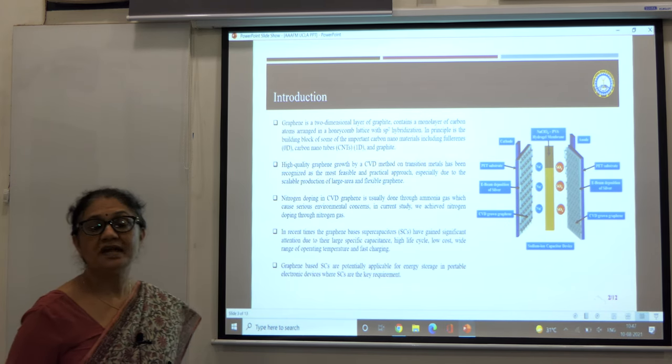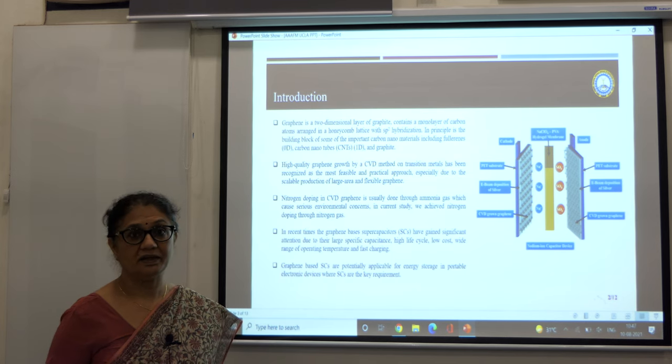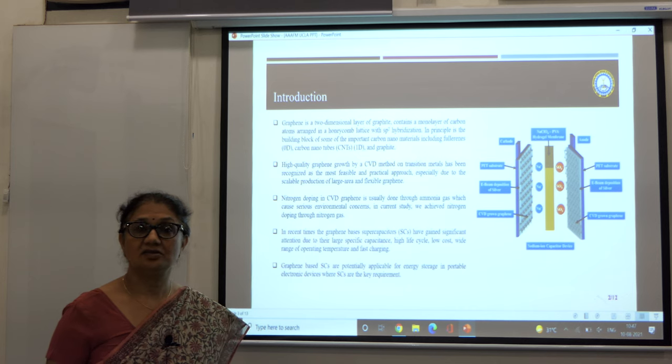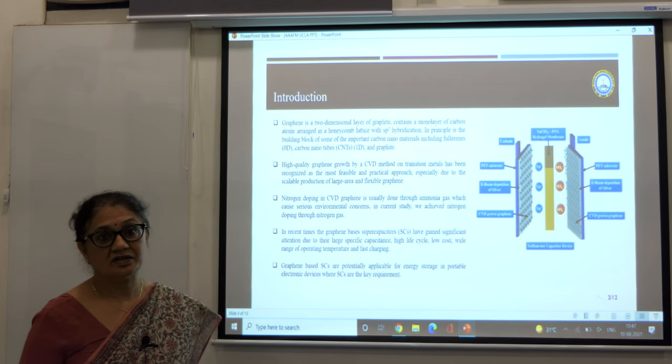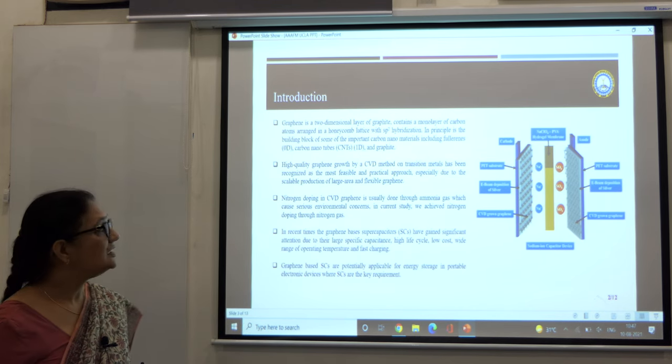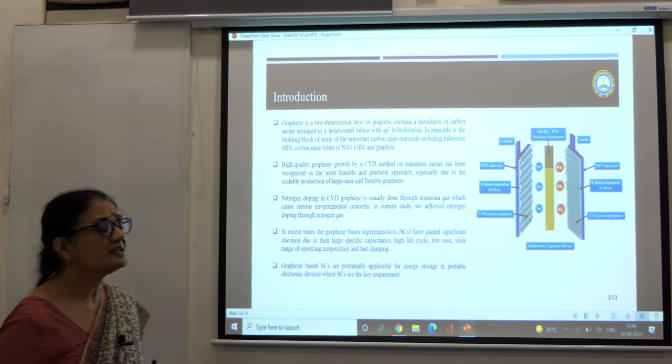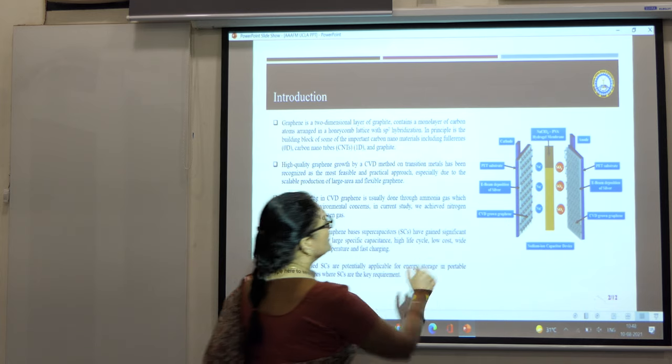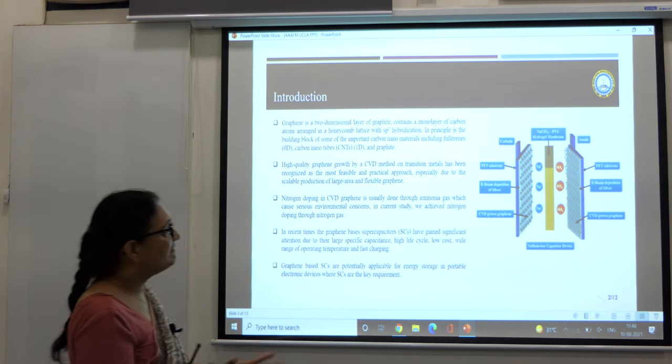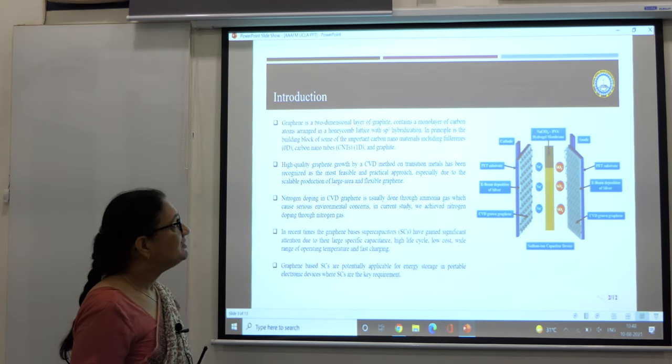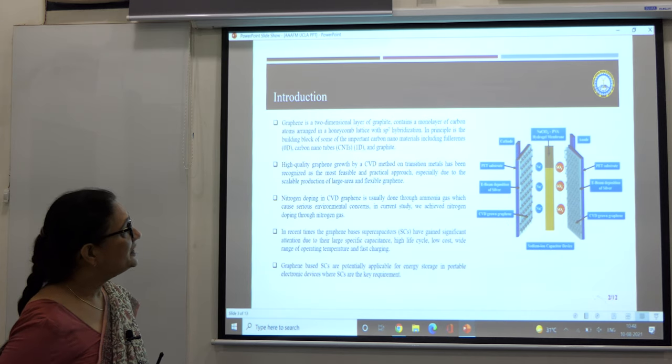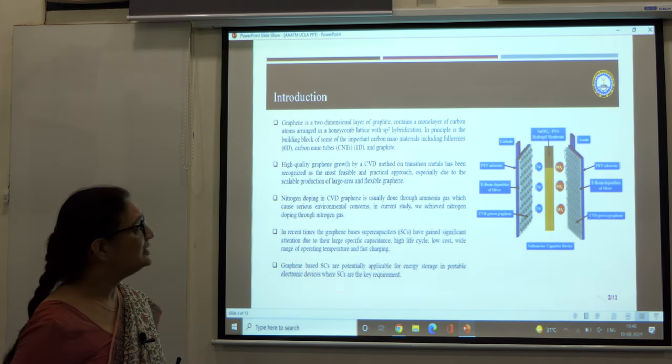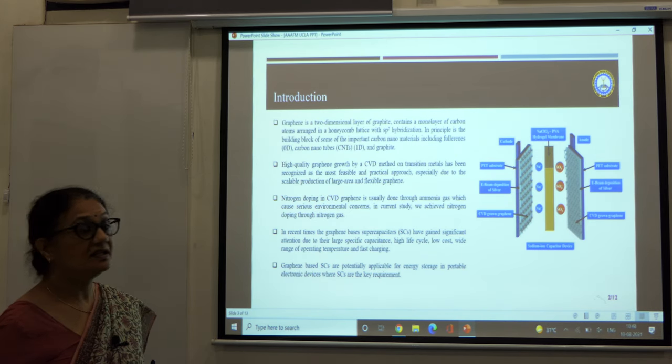Normally researchers have used ammonia as the source for doping in graphene, but considering the hazardous nature of ammonia we have used nitrogen replacing the ammonia in this work. This diagram gives you the device fabrication which we have done, and the two anodes are the CVD grown graphene, the pristine as well as the nitrogen doped.